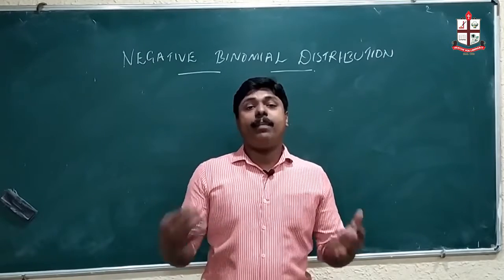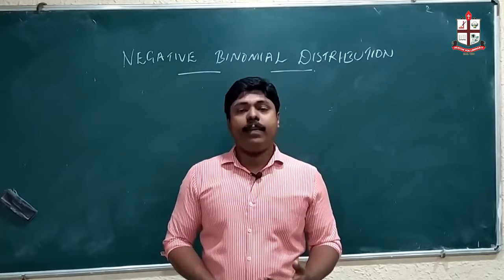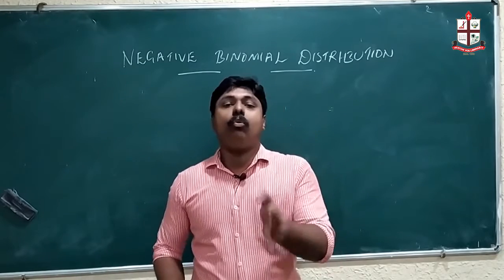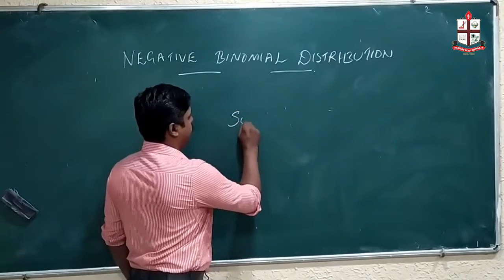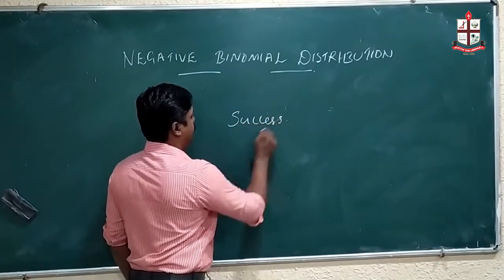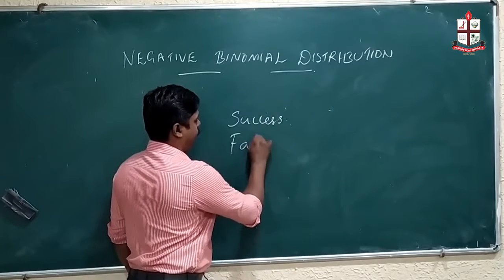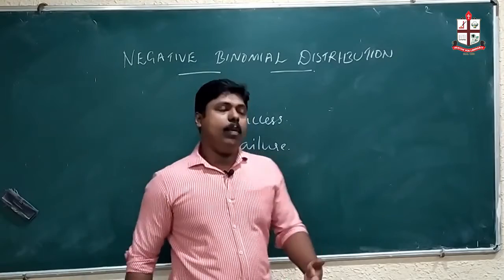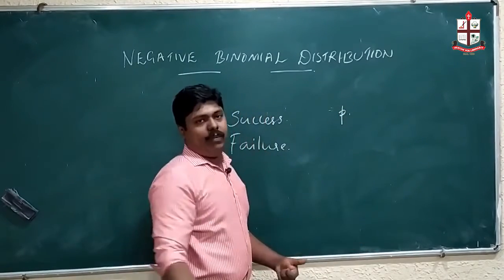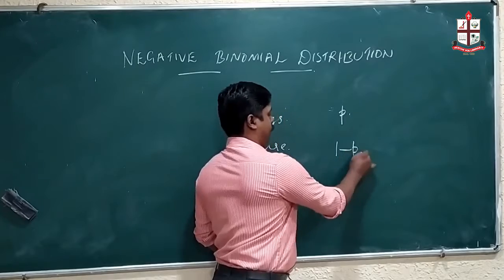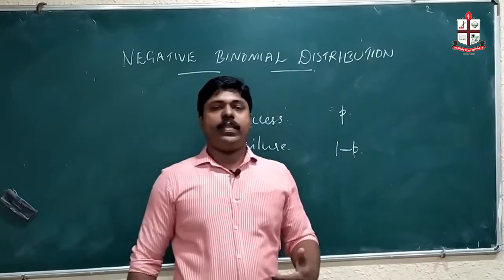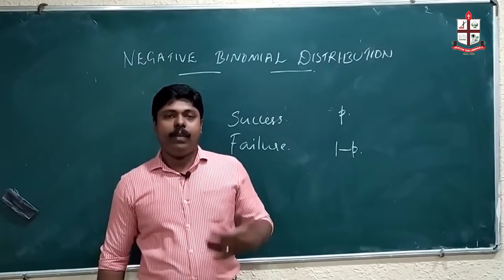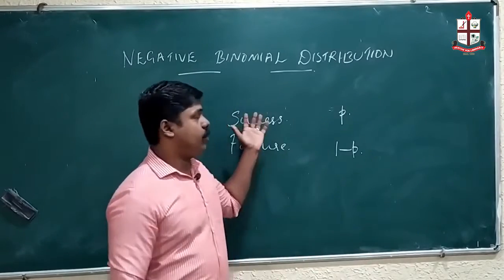A Bernoulli trial is a random experiment with exactly two outcomes: one is success and the next one is failure. If you denote the probability of success as p, the probability of failure will be one minus p. If you satisfy these conditions, it will be a Bernoulli random experiment.